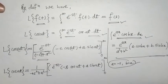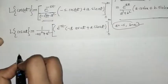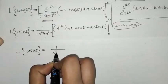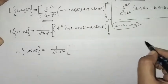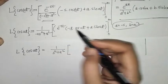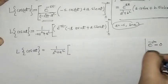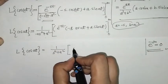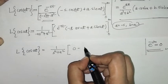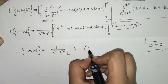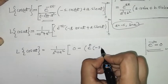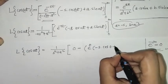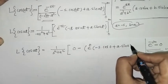We have 1 upon (s² + a²) outside the bracket. Putting t equals infinity: we get e raised to minus infinity, and we know e raised to minus infinity is 0, so the upper limit term becomes 0. Then subtracting the lower limit at t = 0: we get e raised to 0, giving minus s times cos(0) plus a times sin(0).